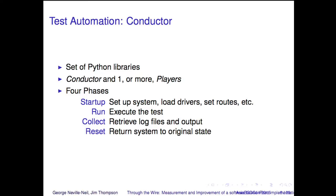I wrote this thing called Conductor — a set of Python libraries you can find on GitHub. Conductor is a very simple scripting system for running tests in a distributed system. You have a system called the Conductor and a bunch of players; the Conductor communicates with them over a network connection. I very strongly recommend that if you're testing networking, your control network and your test network should not be the same network. Conductor has four phases: start up, run, collect, reset. The reset phase is the one everyone leaves out when writing their first test framework — you want to run a test in a consistent state, which means resetting everything to clear caches or tables that would bias your measurement.